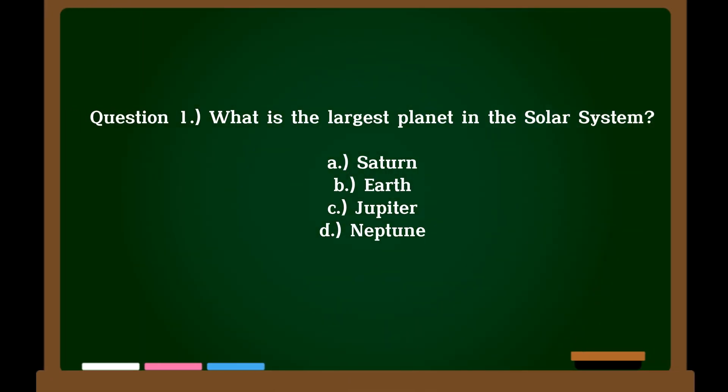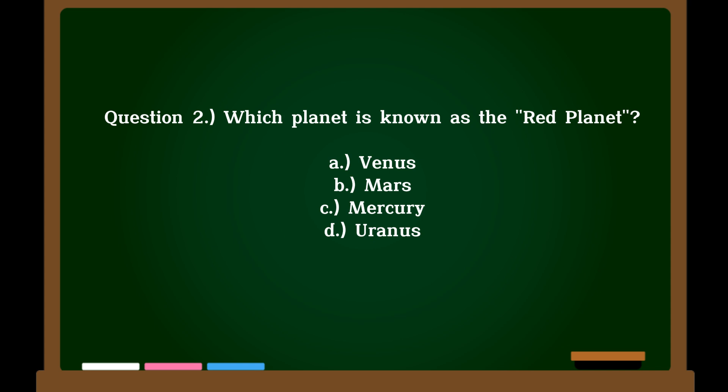Question 1. What is the largest planet in the solar system? A. Saturn, B. Earth, C. Jupiter, D. Neptune. Correct answer: C. Jupiter.